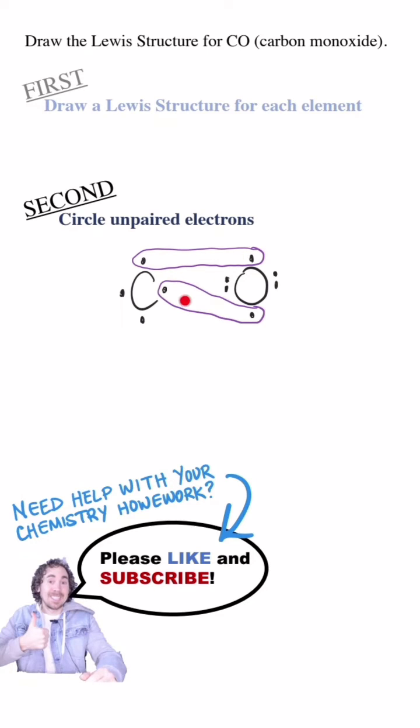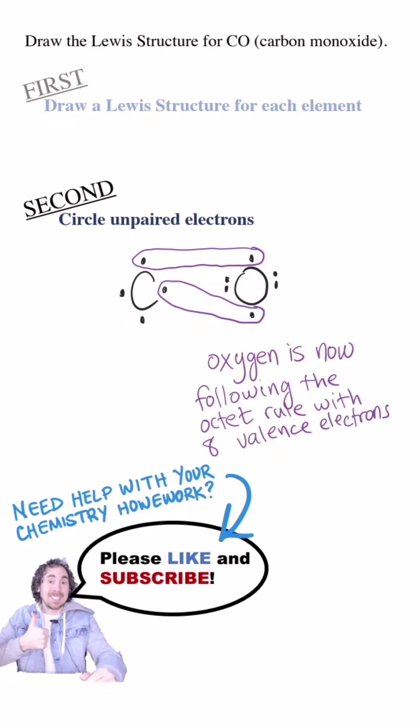Since the oxygen atom is sharing these two electrons, it is now following the octet rule with eight valence electrons. Carbon still only has six valence electrons, and it still needs two more.